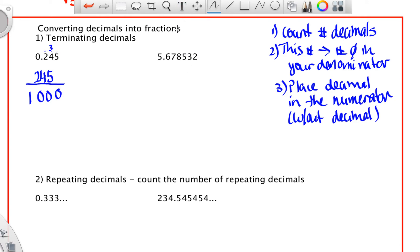How about this one then? So count the number of decimals. So one, two, three, four, five, six. So I have six decimals. So I need one, two, three, four, five, six zeros. And then a one. And then this goes in the top. So five, six.